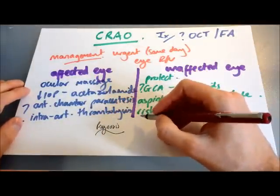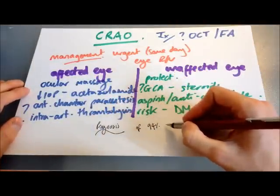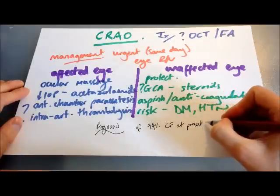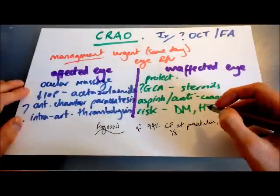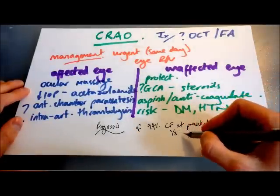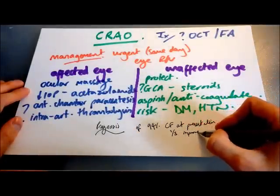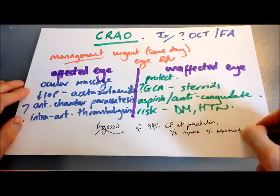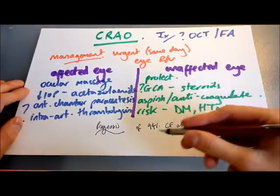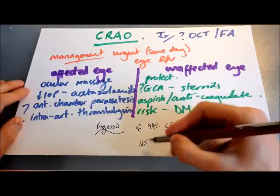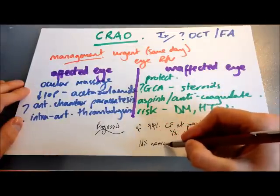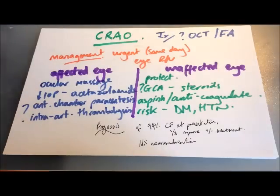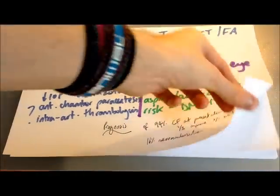The prognosis for central retinal artery occlusion: 94% of people who are counting fingers at presentation — so with really reduced visual acuity — around a third show some improvement either with or without treatment. And 16% of patients have neovascularisation of the iris, which brings the associated risk of neovascularisation glaucoma.